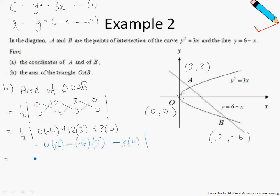So after I work this out, I realize that this is just 54 units, and finally, this is just 27 units squared. So the area of triangle OAB is 27 units squared.